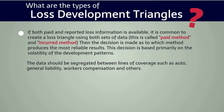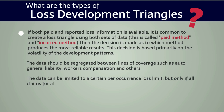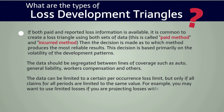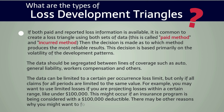The data should be segregated between lines of coverage such as auto, general liability, workers compensation, and others. The data can be limited to a certain per occurrence loss limit, but only if all claims for all periods are limited to the same value. For example, you may want to use loss limits if you're projecting losses within a certain range like under $100,000. This might occur if an insurance program is being considered with a $100,000 deductible. There may be other reasons why you might want to forecast losses under a specific loss limit.